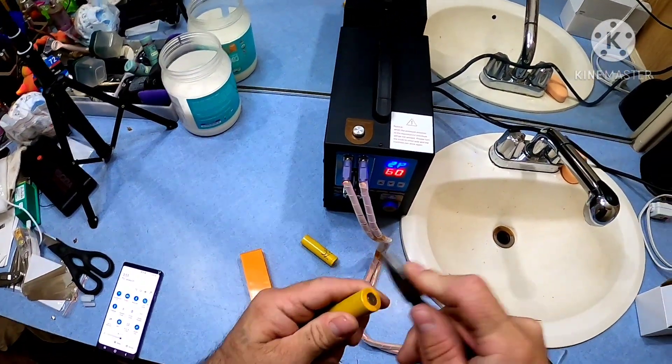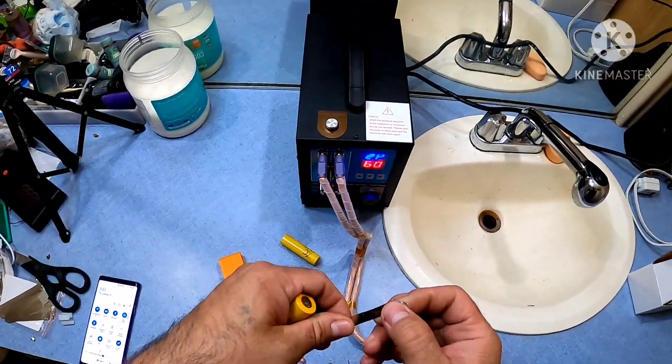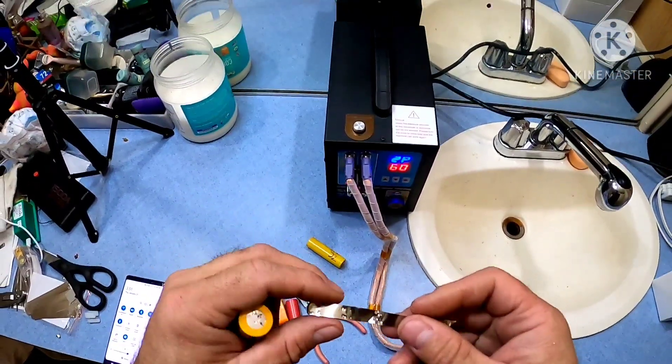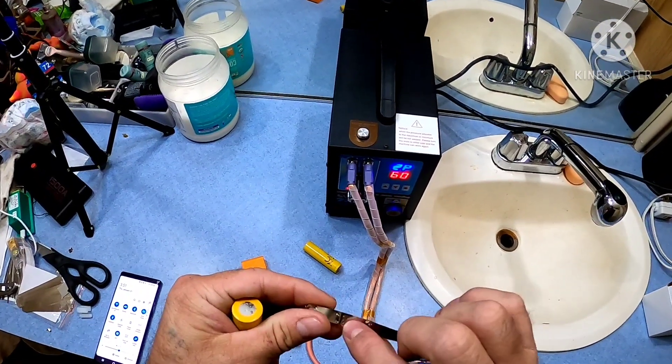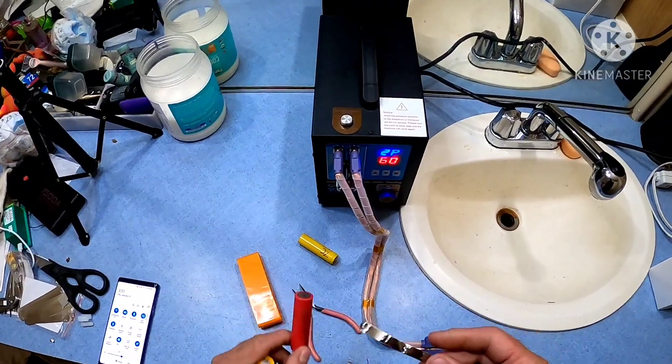These are just test cells. I could care less about them. But as you can see, there's holes in the nickel where I had to rip it off the cells because it was on so good.